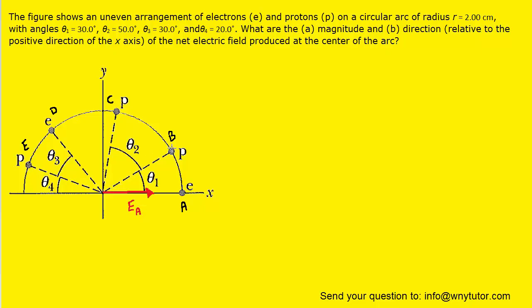For the charge marked B, it is a proton and is therefore positively charged. Electric field lines point away from positive charges, so we would point our vector away from charge B, and we'll label that vector EB. Charge C is also a proton, so we're going to point the electric field produced by that charge away from it, and we can label it EC.